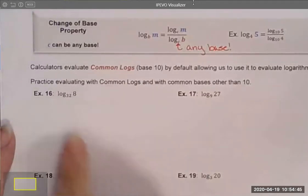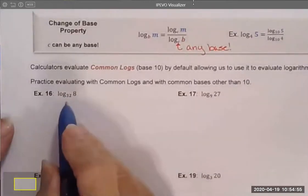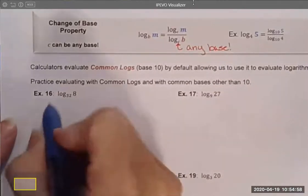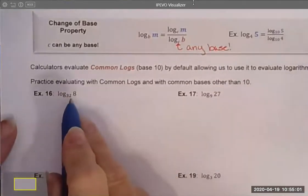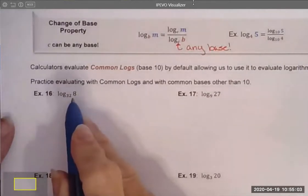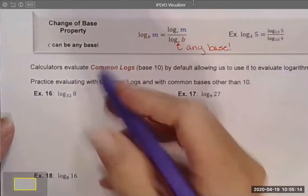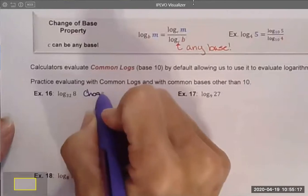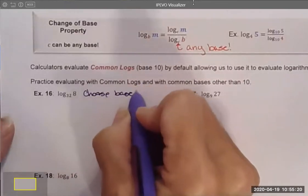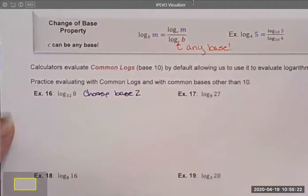So let's try evaluating one of these examples using a change of base. I'm going to start off with number 16. You notice I've skipped a few of these. I'm going to rewrite this using our change of base property. And before I even do, I have to decide what base to choose. What I notice immediately is 32 and 8, both are powers of 2. So I think in this case, using a base 2 would be pretty convenient.